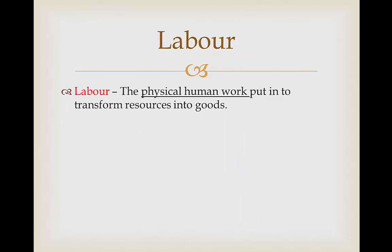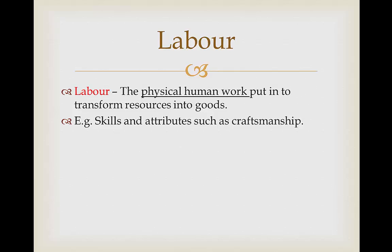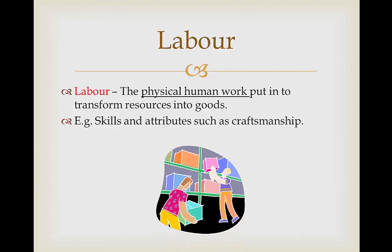Labour. Labour is the physical human work put in to transform the resources that we have into goods. This includes skills and attributes such as craftsmanship. So when we're producing a good or service we're going to need people to actually get together and make it. Labour is the process of turning the input into an output, done using capital — the assets and machinery — to transform these factors of production.